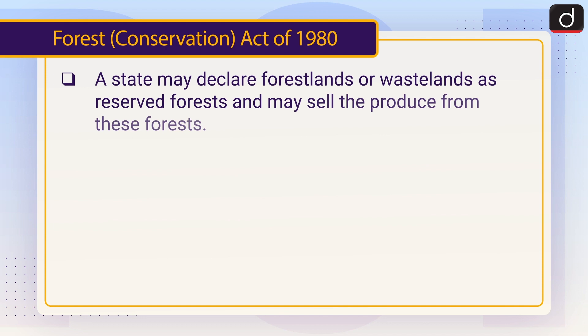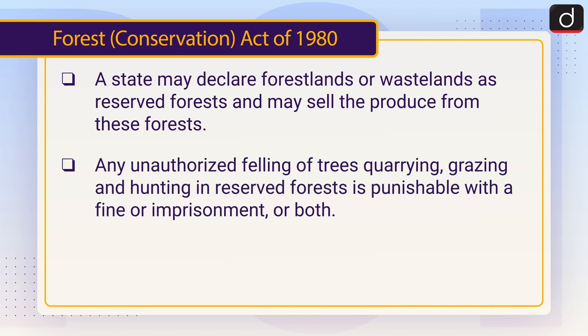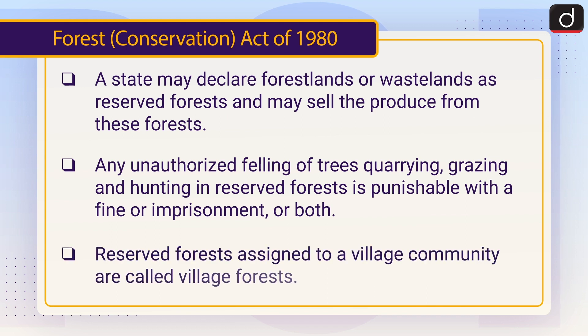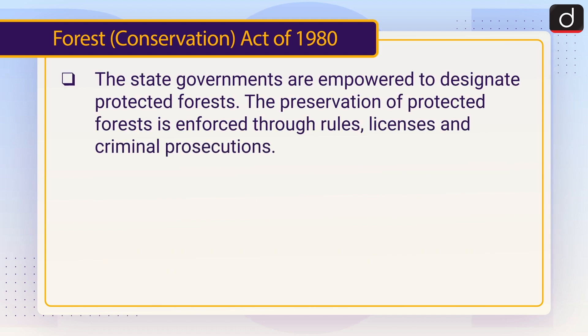A state may declare forest lands or waste lands as reserved forest and may sell the produce from these forests. Any unauthorized felling of trees, quarrying, grazing, and hunting in reserved forest is punishable with a fine or imprisonment or both. Reserved forests assigned to a village community are called village forests. The state governments are empowered to designate protected forests, and their preservation is enforced through rules, licenses, and criminal prosecutions.